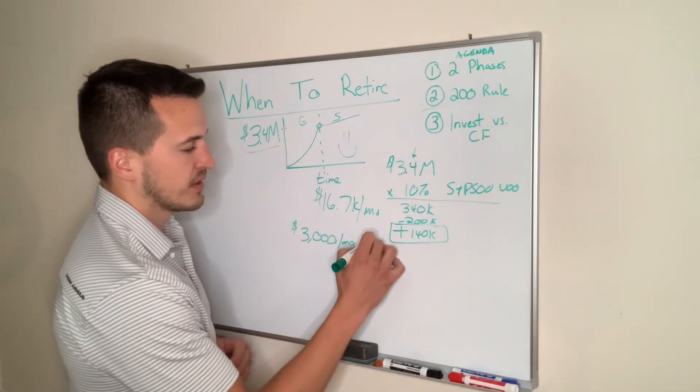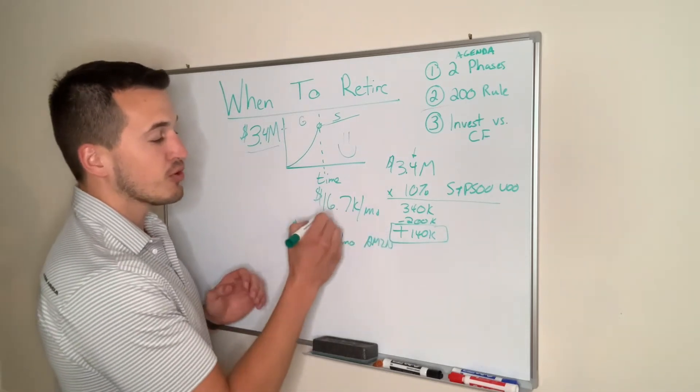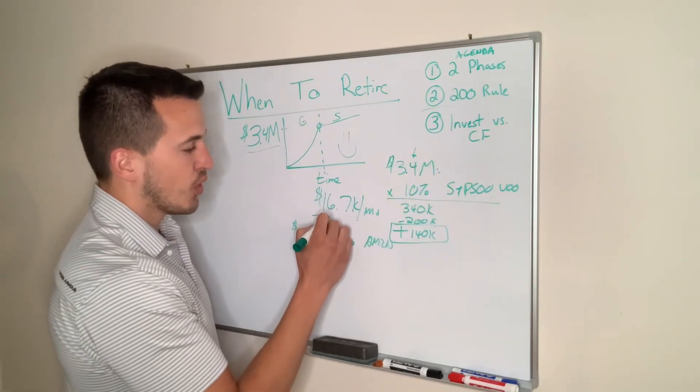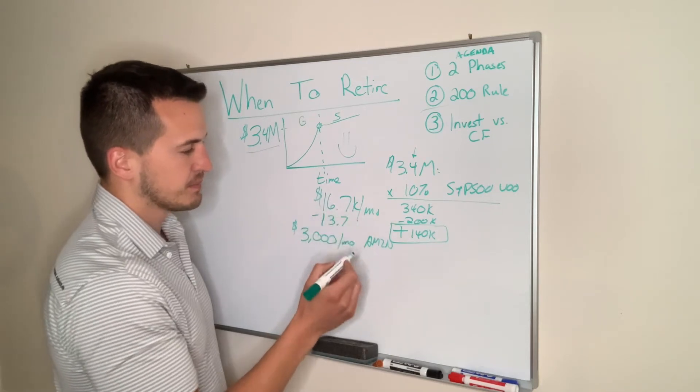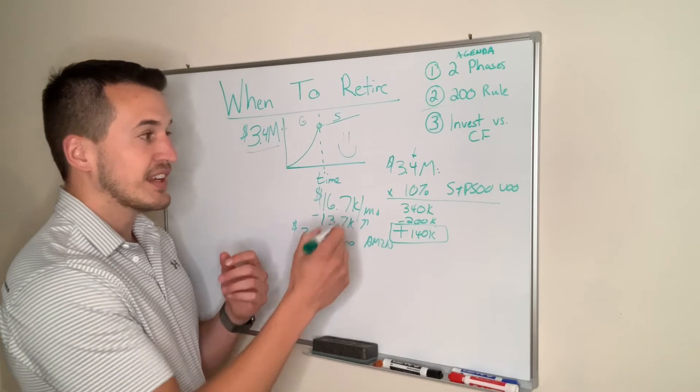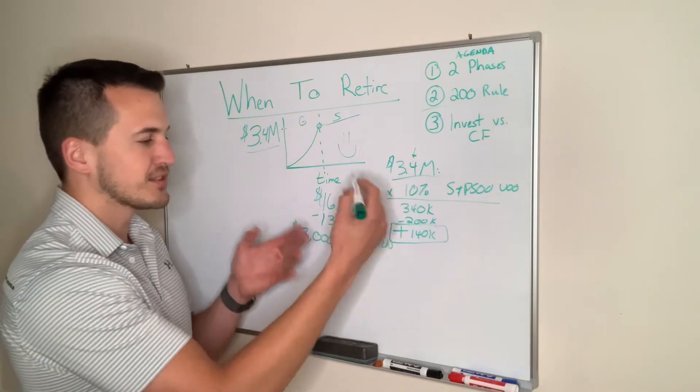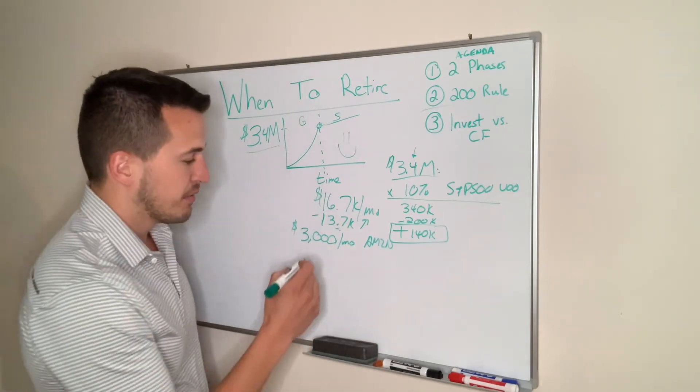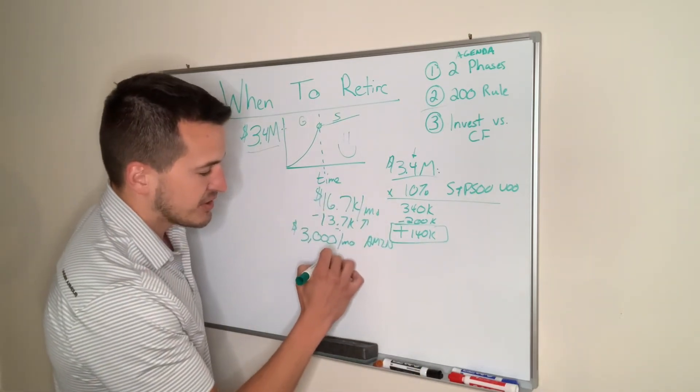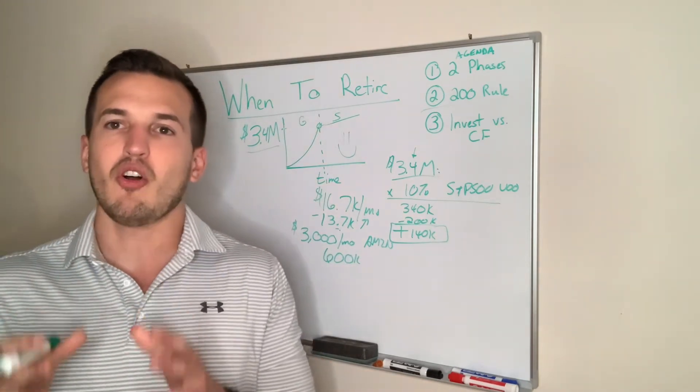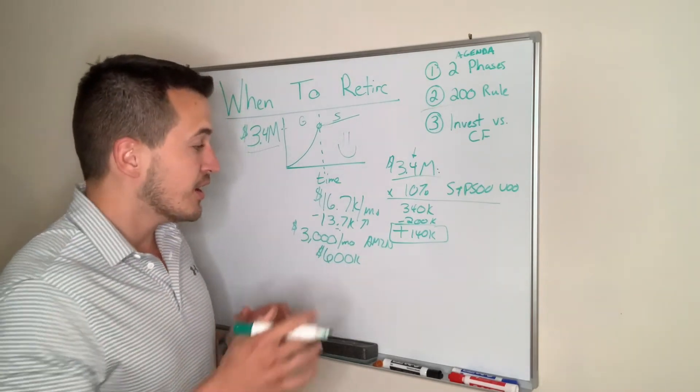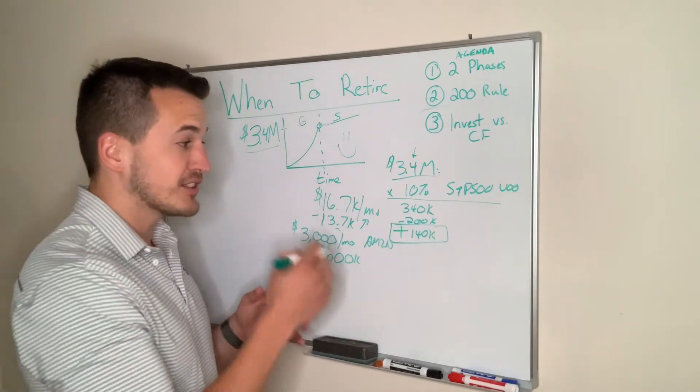Let's say you made $3,000 a month on your product of net profit in that Amazon business. That means that you no longer need $16,700 per month from stocks. That means on an equivalent basis, you only need $13,700 per month, which is great because you can hit this a lot quicker from an investment standpoint. Multiply it by 200, it's a smaller number. What does that be equivalent of? So $3,000 per month is the equivalent of, multiply it by 200, that is $600,000.